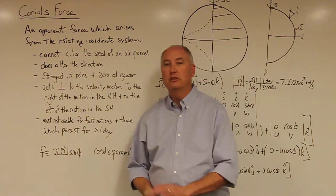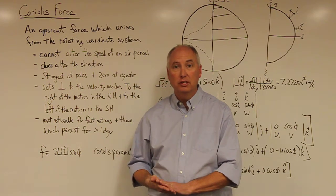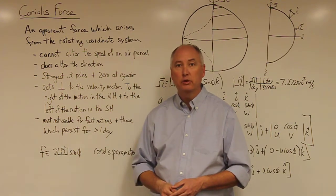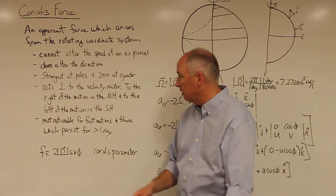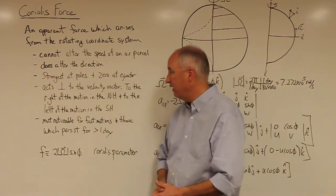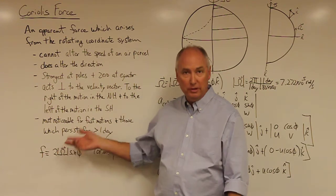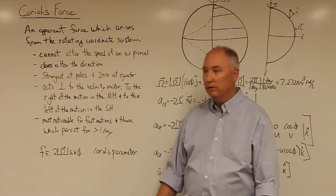It acts perpendicular to the velocity vector, and it causes a deflection of the air parcel to the right of the motion in the northern hemisphere and to the left of the velocity vector in the southern hemisphere. The Coriolis force is most noticeable for objects that are moving very fast and for motions that are persistent that last for a period greater than one day.